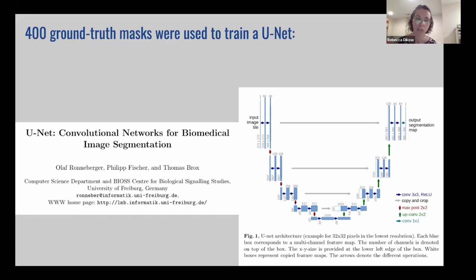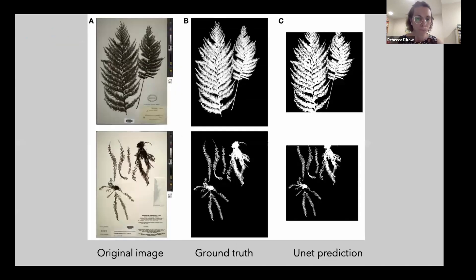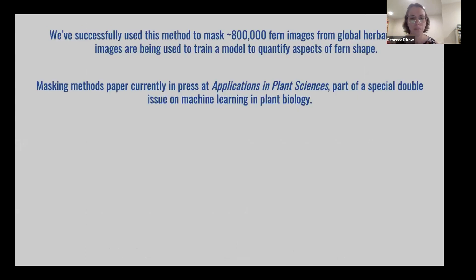We built 400 of these ground truth masks to train a U-Net. U-Nets were originally developed for medical applications. Here's an example of the original image, the ground truth, and the U-Net prediction — squared because that becomes the input for our other deep learning models. We've used this method to mask around 800,000 fern images, not just from the Smithsonian but from herbaria all over the world. Every fern image we could find on GBIF has been masked this way, and those images are being used to train a model to summarize aspects of fern shape for looking at global patterns of biodiversity in ferns.